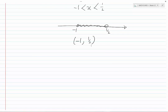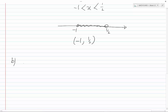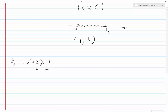Now let's look at problem B. The expression is minus x squared plus x is greater than or equal to 1. We bring all terms to one side: minus x squared plus x minus 1 is greater than or equal to 0.